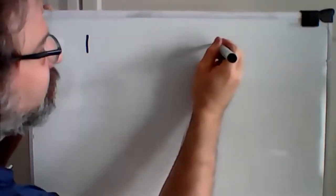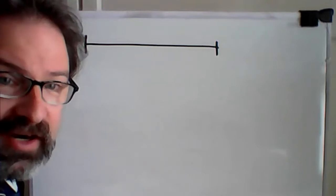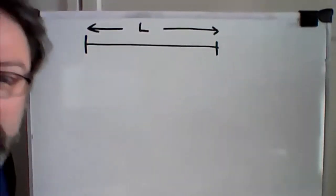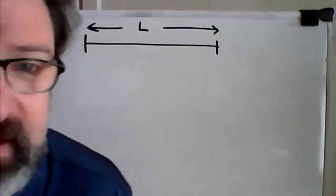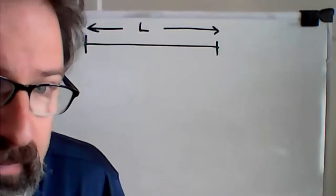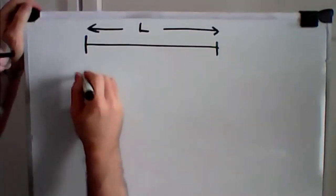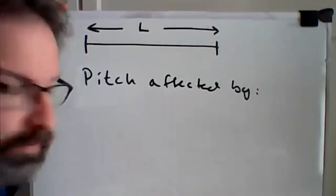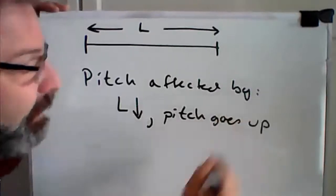You've all seen a guitar, piano, or violin. Here's a simplistic model of what a string on a guitar looks like — it has a certain length. Let's describe what we know from experience: you have a guitar string of a certain length, and there are certain things that affect the pitch.